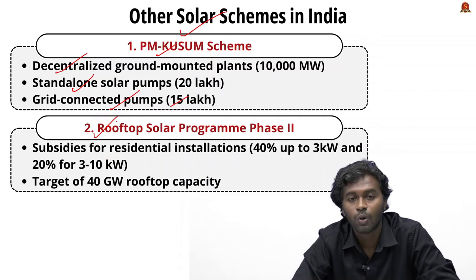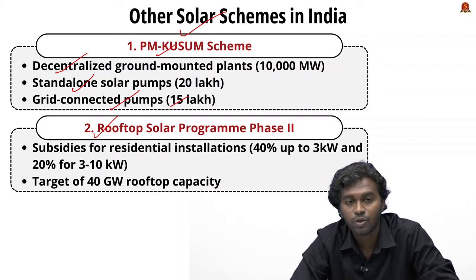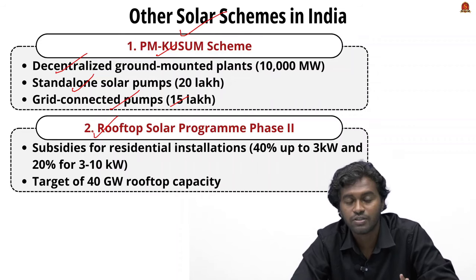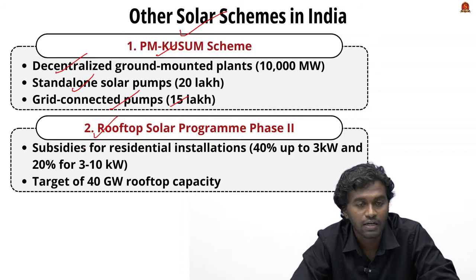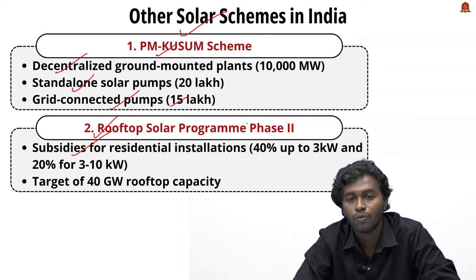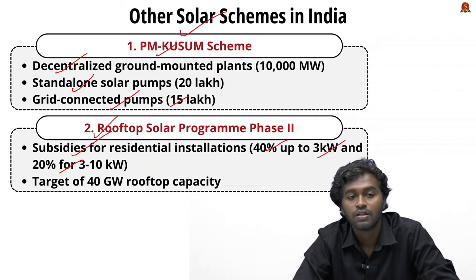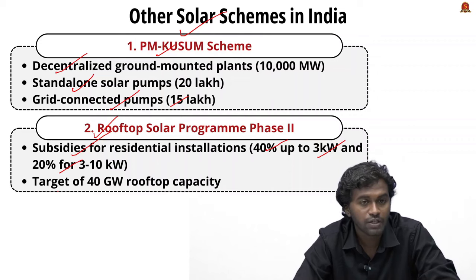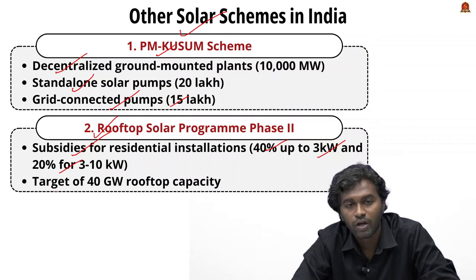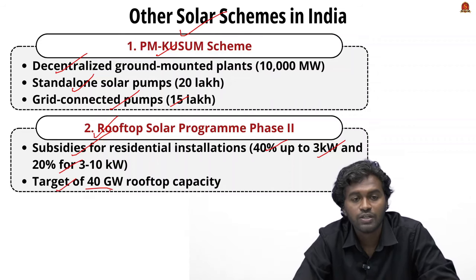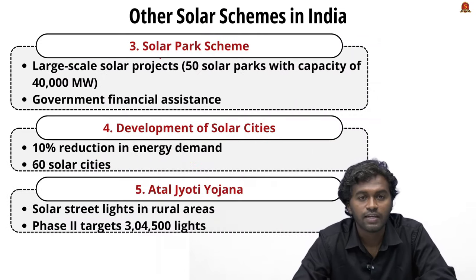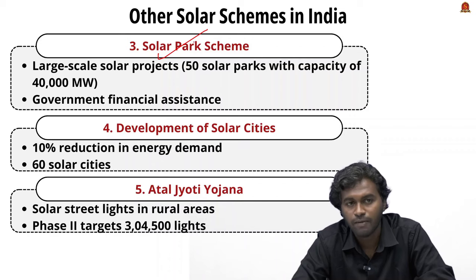The second major initiative is the Rooftop Solar Programme Phase 2, which aims to increase rooftop solar installation in residential, commercial, and industrial sectors. Beneficiaries receive a subsidy of up to 40% for systems up to 3 kilowatts and 20% for systems between 3 and 10 kilowatts. The target of this programme is to achieve 40 gigawatt rooftop solar capacity by 2022.